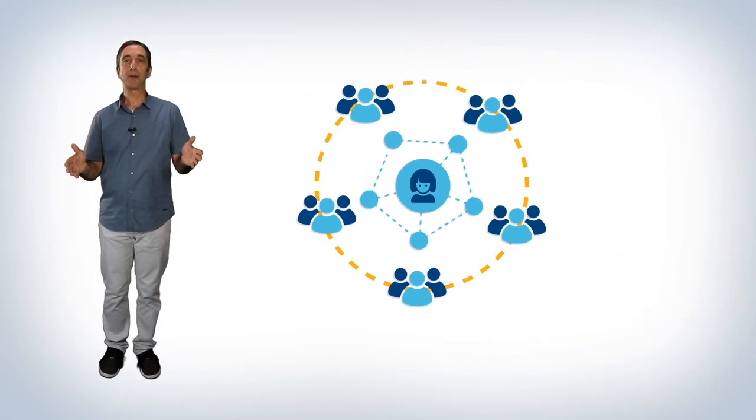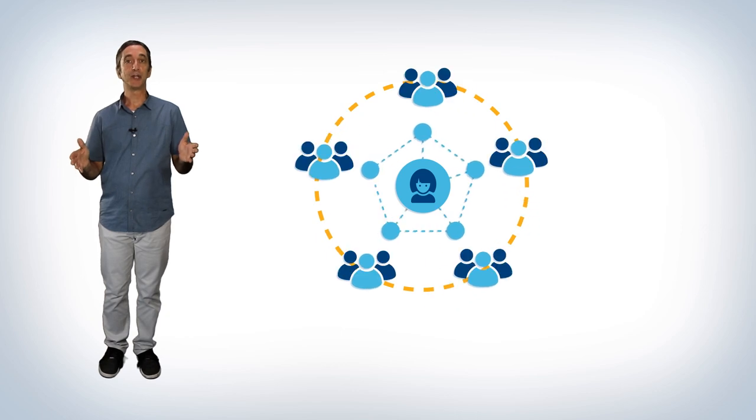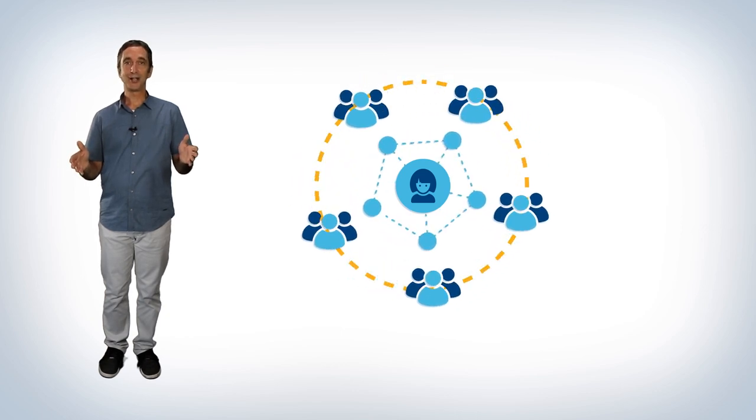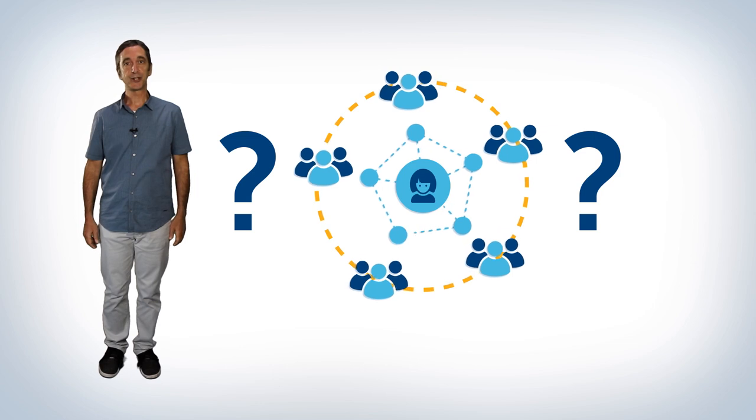Now, take a step back. With your stakeholder map, you've just created a picture of your business ecosystem. Congratulations! But is it the right picture? In order to find that out, we're going to use some more observational techniques.